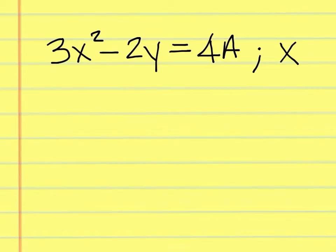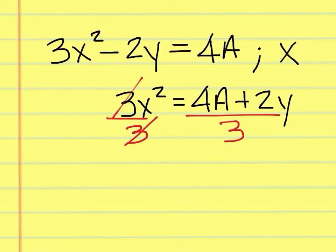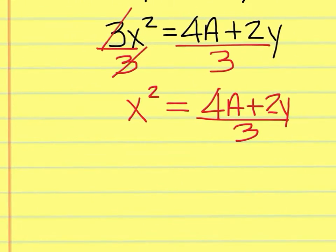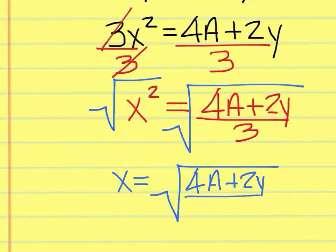We want x by itself in this problem. We must first move the subtraction over to this side and change it to plus, so 3x squared equals 4a plus 2y. We have multiplication by 3 against the x squared, so we need to divide both sides by 3 — that cancels out, leaving x squared equals 4a plus 2y over 3. Then, to get rid of the square, we must square root both sides, leaving x equals the square root of 4a plus 2y over 3.